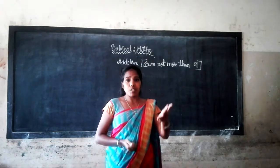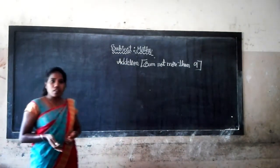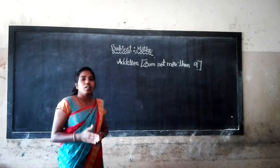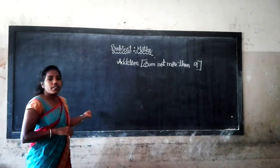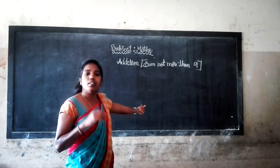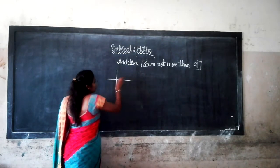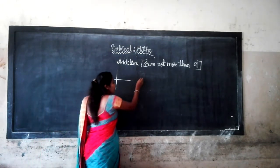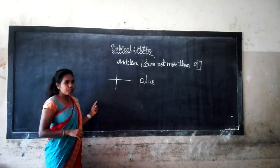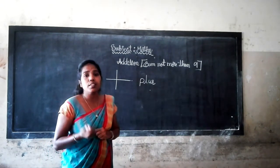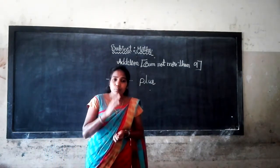You know very well what is the symbol of addition. As I told you, the basic concepts of Mathematics are addition, subtraction, multiplication, and division. The symbol of addition is called plus — P-L-U-S — plus. It helps to add two numbers, two different numbers. It is called plus, it is also the symbol of addition.